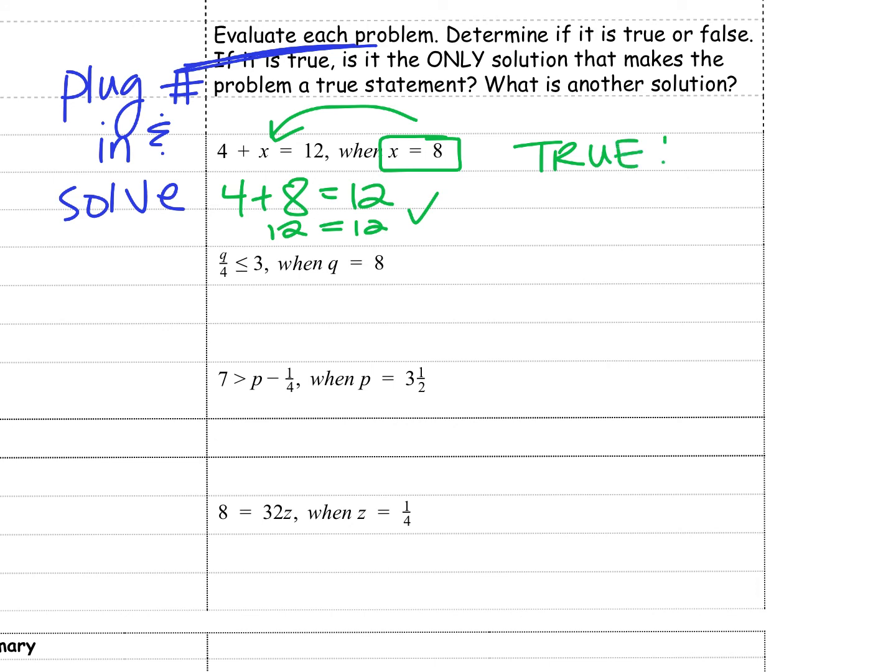Now, because it's true, is it the only solution that makes it true? Well, could I do 4 plus any other number to make 12? And when I think about it, no. The only possible answer is 8. The only thing we can add to 4 to make 12 is 8. So it's true and it's the only answer. Because it's equal.